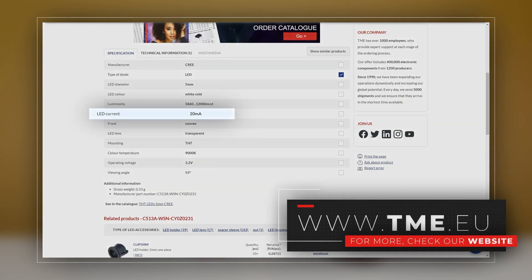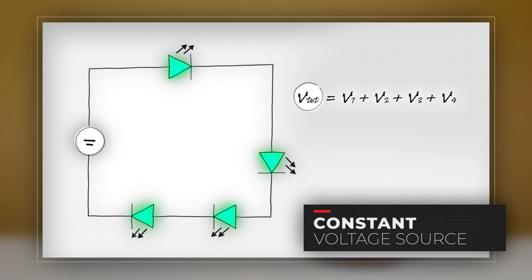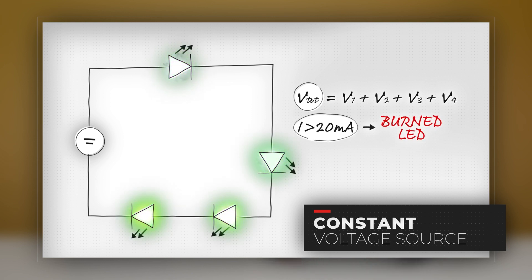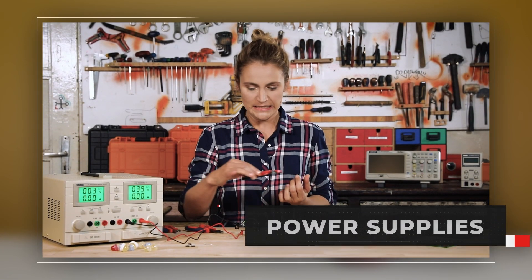Usually the maximum forward current is 20 mA or 50 mA for ribbon LEDs. Coming back to CC and CV: the constant voltage LED drivers will keep the voltage at the same level — let's say 12 volts — and will increase the current as the number of LEDs increases. Do you get what happens if you connect the CV power supply to CC LEDs? If you want more information about linear or switch mode power supplies, you can check our other video.